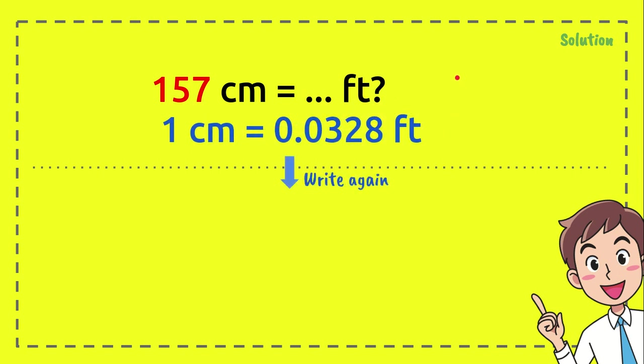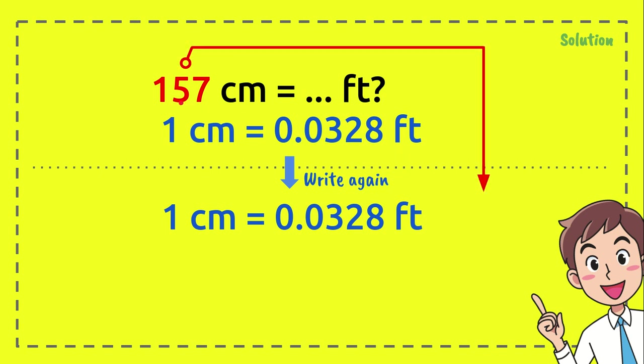And followed by the formula, again just write, put it here. And after that you have 157, you put it here and multiply with this number.